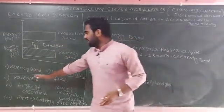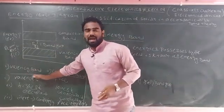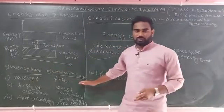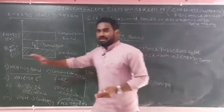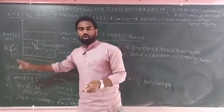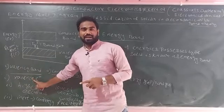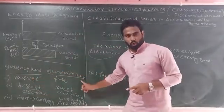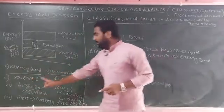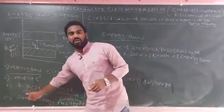Summary: the valence electron energy in a solid is in the valence band; free electron energy is in the conduction band. The valence band corresponds to the highest occupied energy level, and the conduction band corresponds to the lowest unoccupied energy level. For inert gases, the valence band is completely filled.